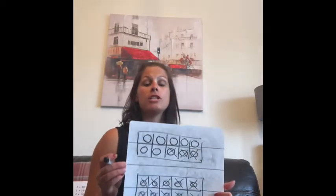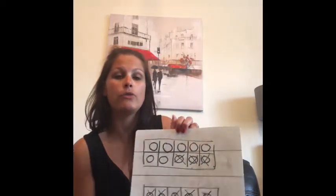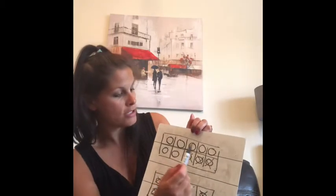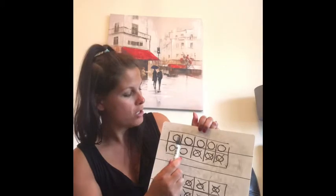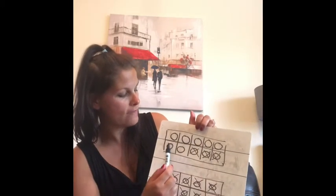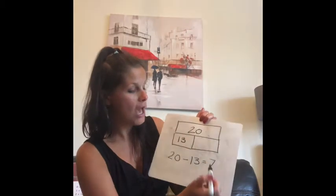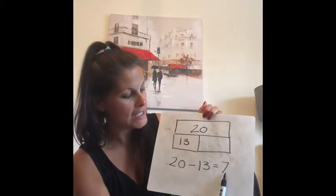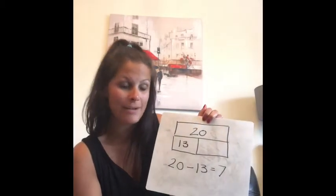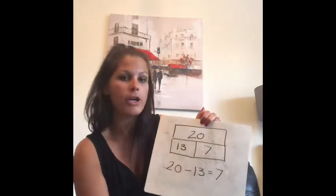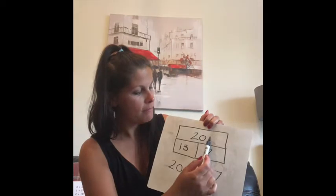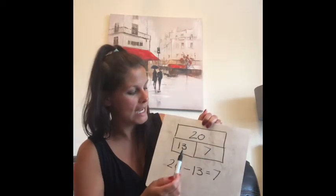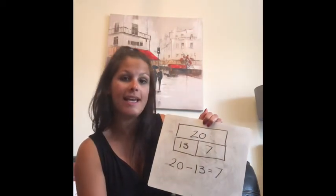Okay, so I've crossed 13 out. I'm going to count what's left that haven't got crosses on, the circles that haven't got crosses on. 1, 2, 3, 4, 5, 6, 7. And of course, I know 13 and 7 make 20. So that number goes there. 13 and 7 make 20. 20 take away 13 is 7.